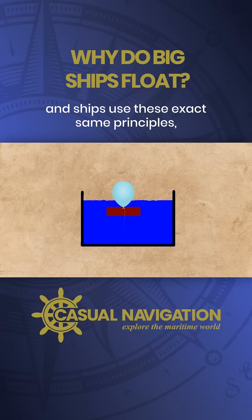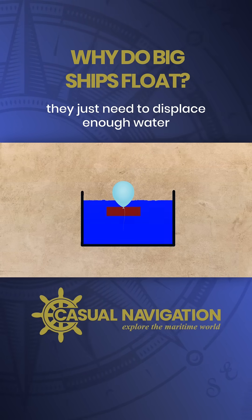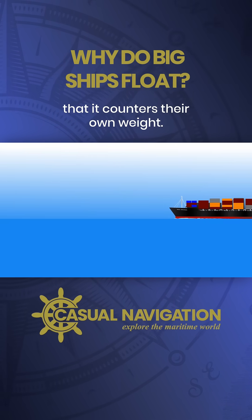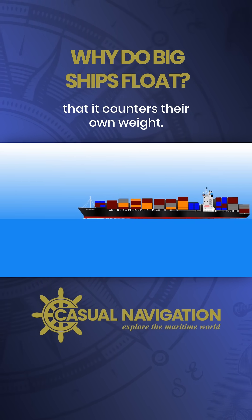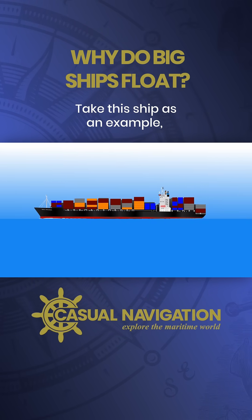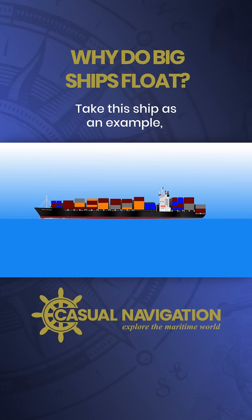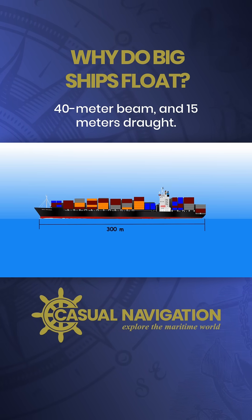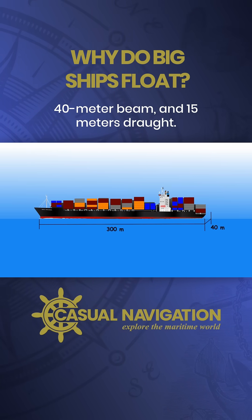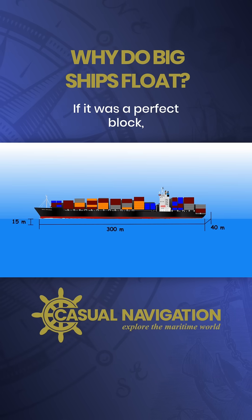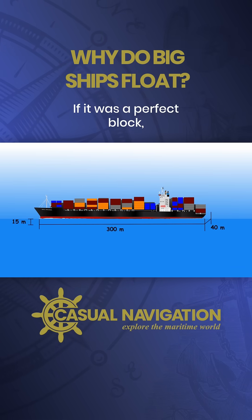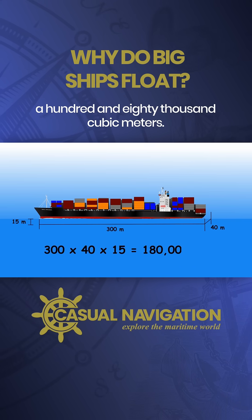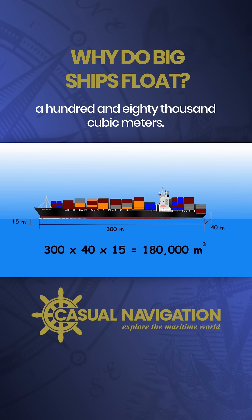Ships use these exact same principles — they just need to displace enough water that it counters their own weight. Take this ship as an example: its rough dimensions are 300 metres in length, 40 metre beam, and 15 metres draft. If it was a perfect block, it would have a volume of 180,000 cubic metres.